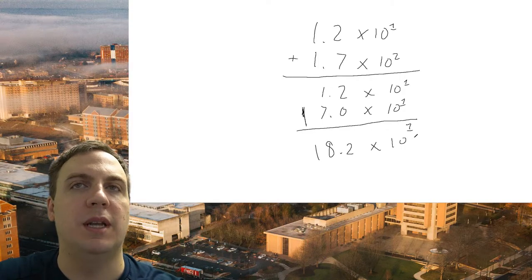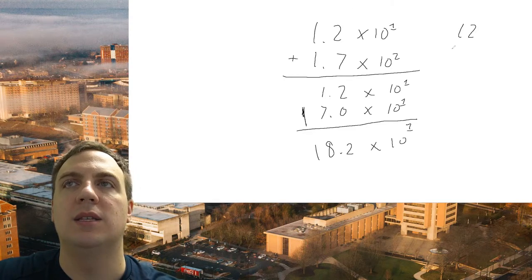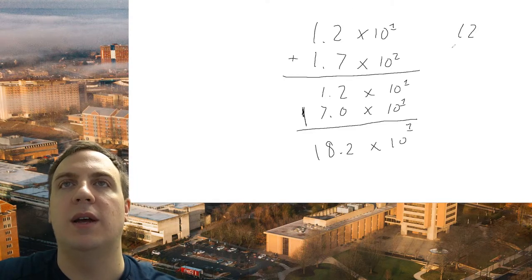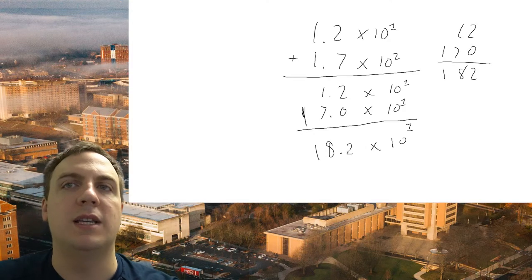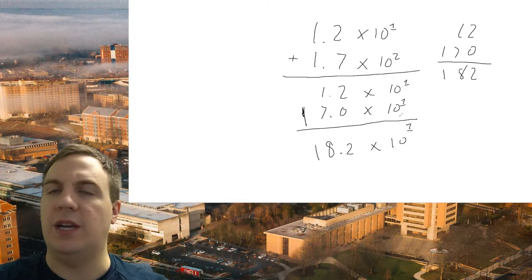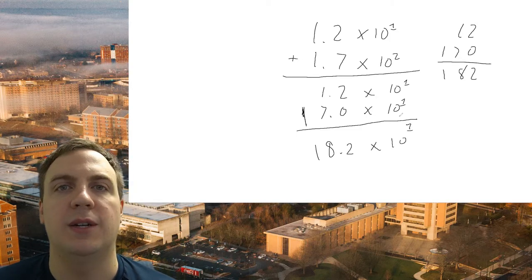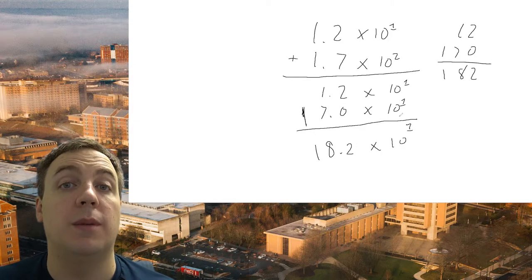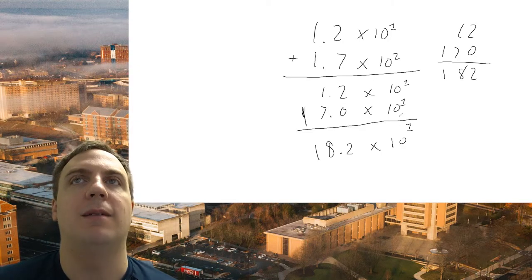We get 18.2 times 10 to the first. To verify: 1.2×10¹ is 12, and 17.0×10¹ is 170. 12 plus 170 equals 182, and 18.2 times 10 to the first is also 182 — that checks out. For subtraction, we do the same thing: match the powers, line up the decimal point, then perform the arithmetic.